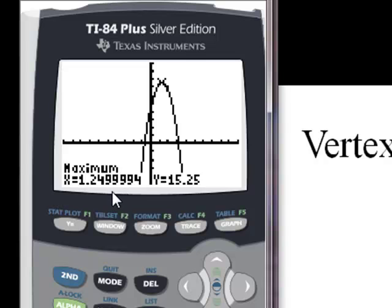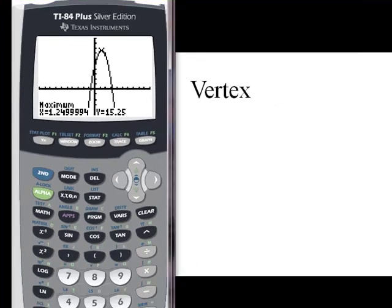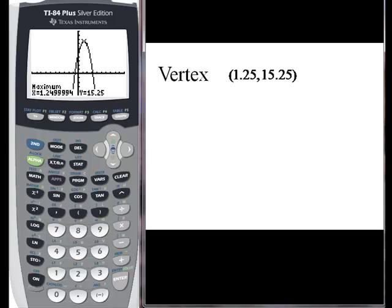And because the calculator uses numerical methods, this actually will round to 1.25. You can see in the other video that we were able to get it to exactly 1.25. So there's our vertex. It's given as a point.